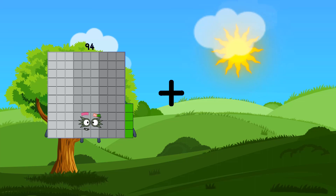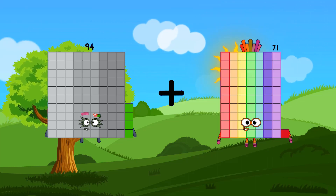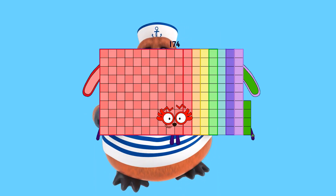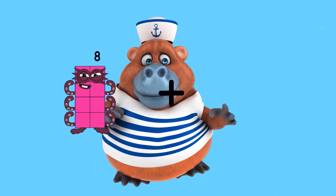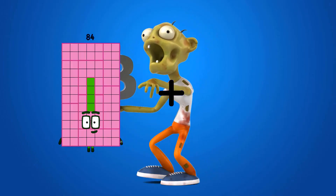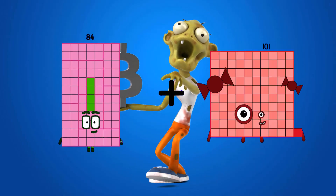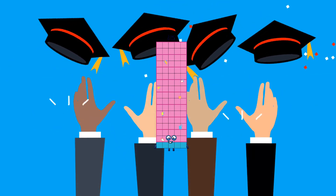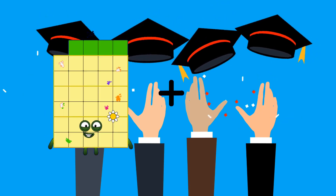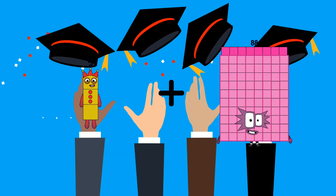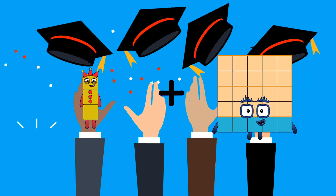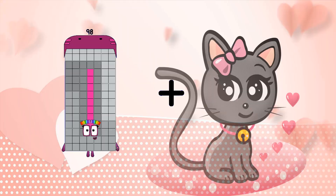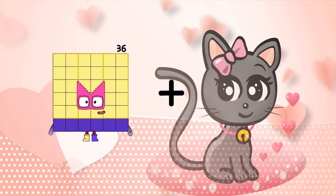94 plus 80 equals 174. 84 plus 1 equals 85. 65 plus 85.